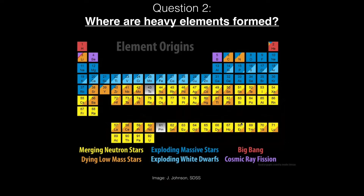Neutron star mergers are very good candidates because they naturally eject very neutron-rich matter. And we have actually observed in the first neutron star merger a kilonova — a signal powered by the radioactive decays of at least some of these elements — so we know it happens. The open question is whether neutron star mergers can explain the actual observed abundance of all of these elements and whether there are enough neutron star mergers in the universe to produce most of these heavy elements, or if we need some other source — the most common alternative being some rare type of core collapse supernova explosion.